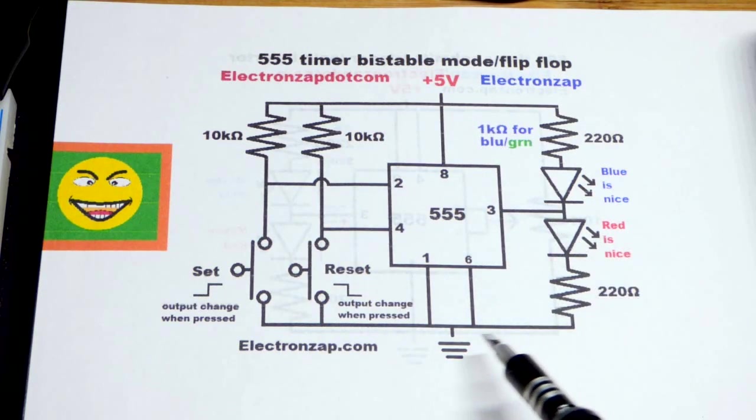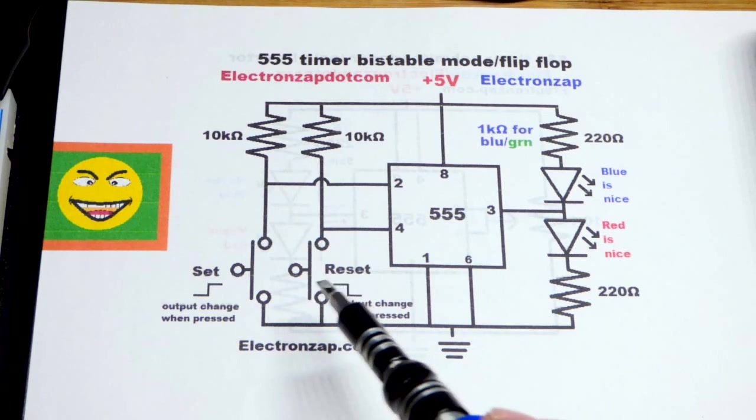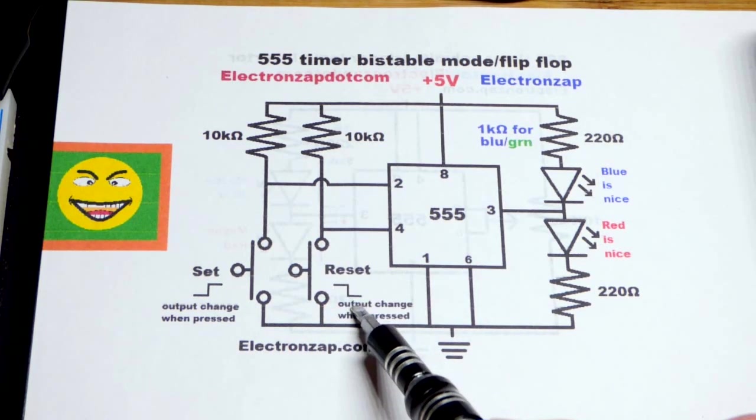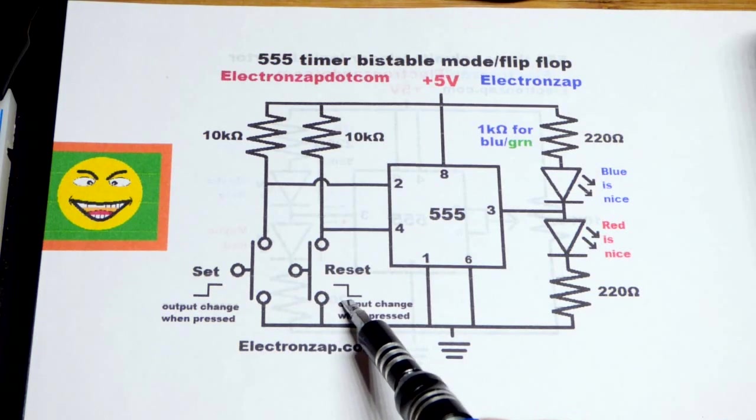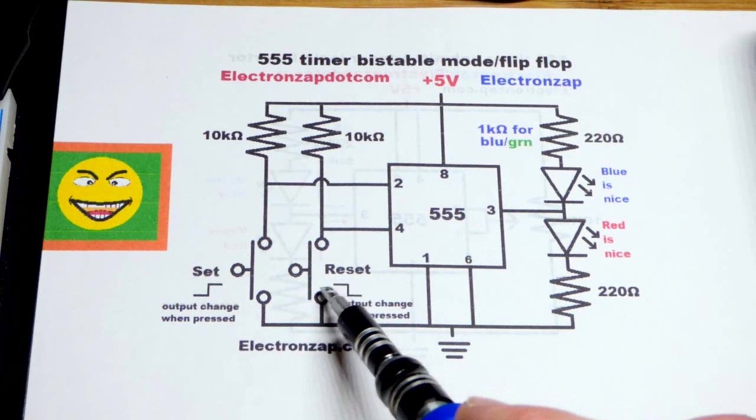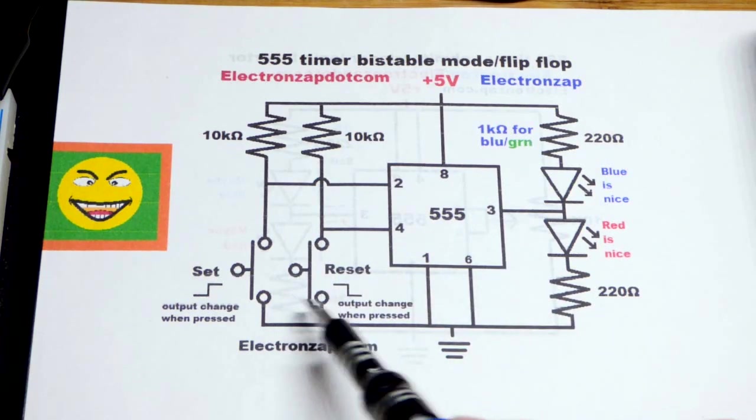You can see the current path there, the red LED lights up. If we press the reset pin, and the reset pin is the dominant pin, if you're holding that the output is low no matter what else you do.